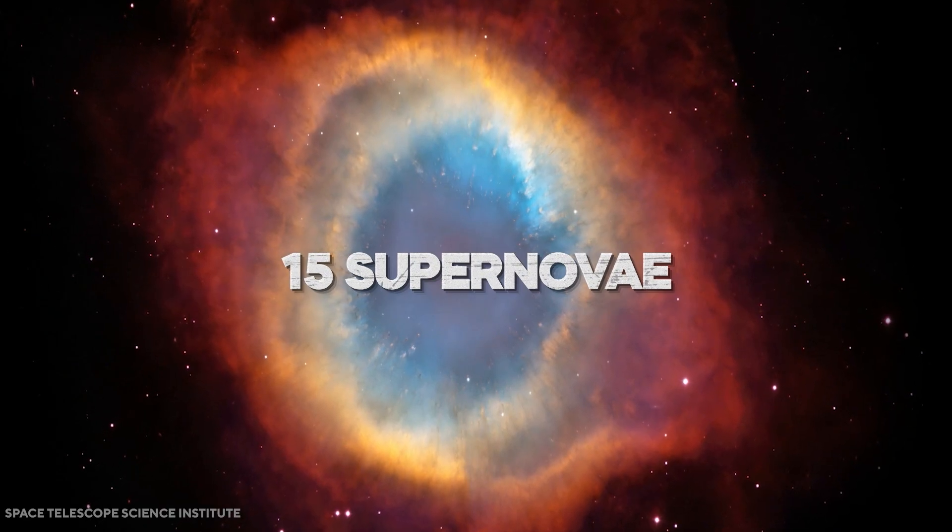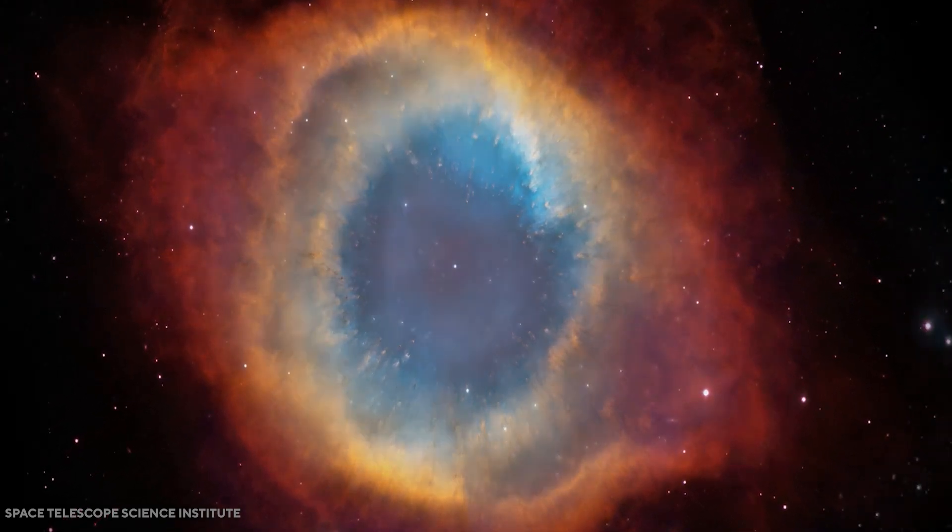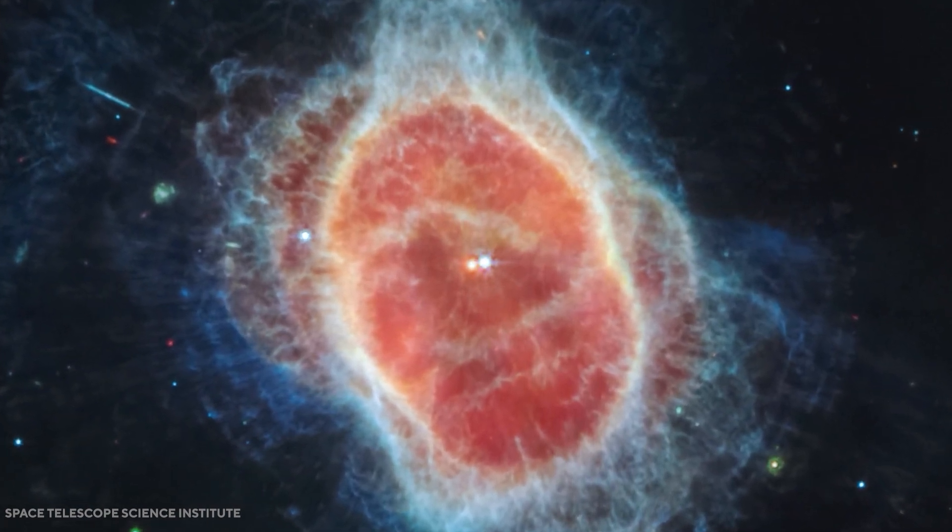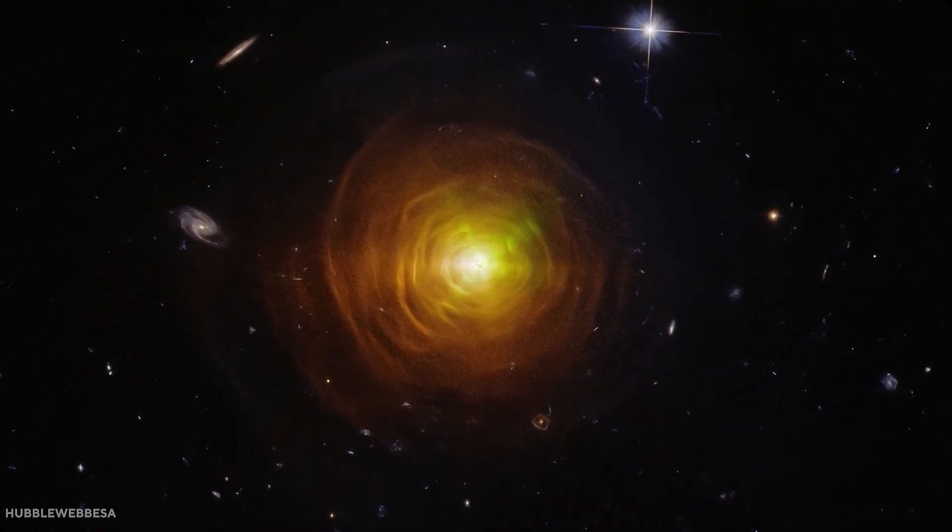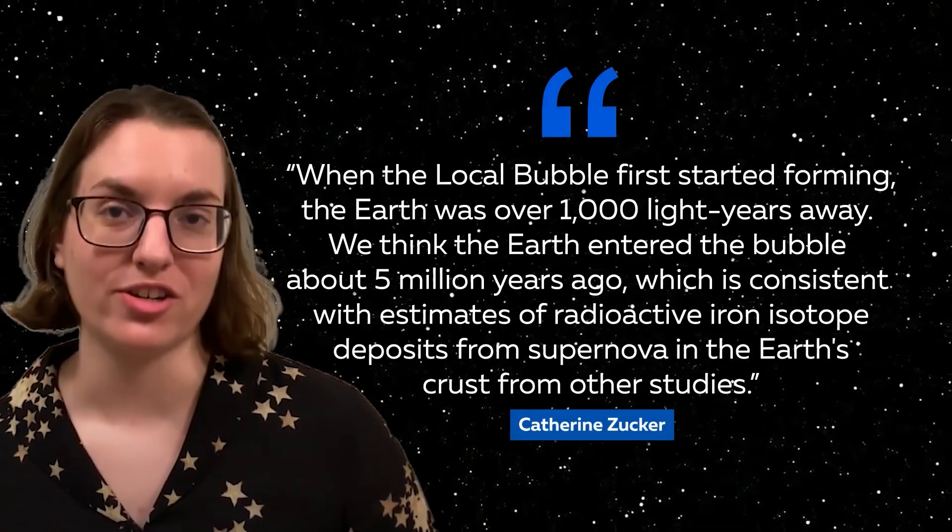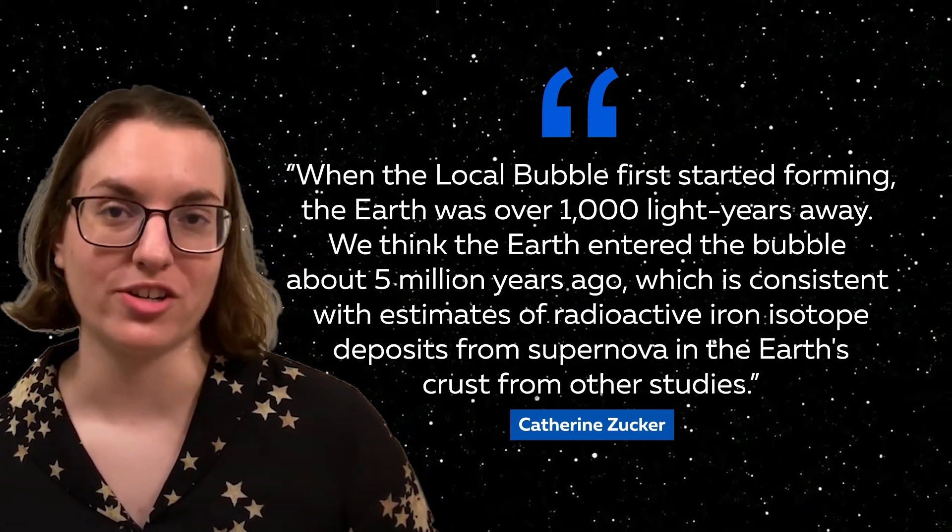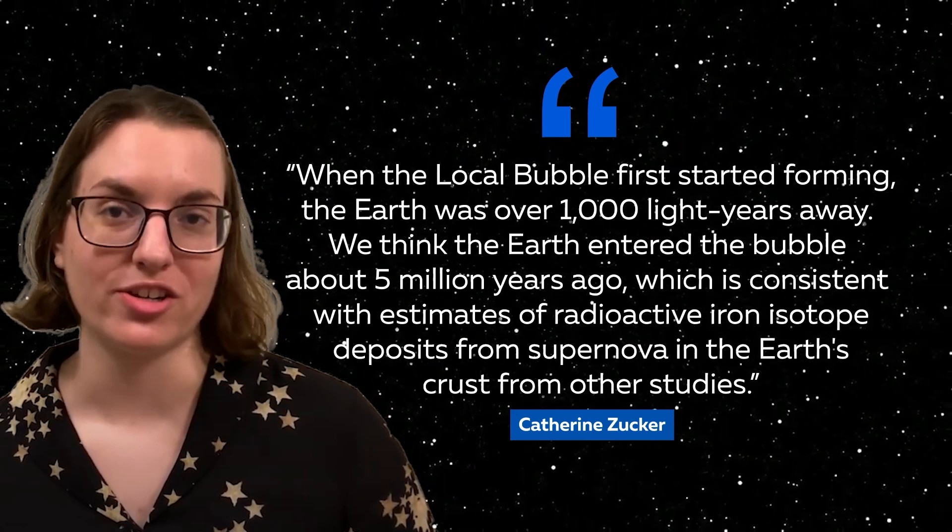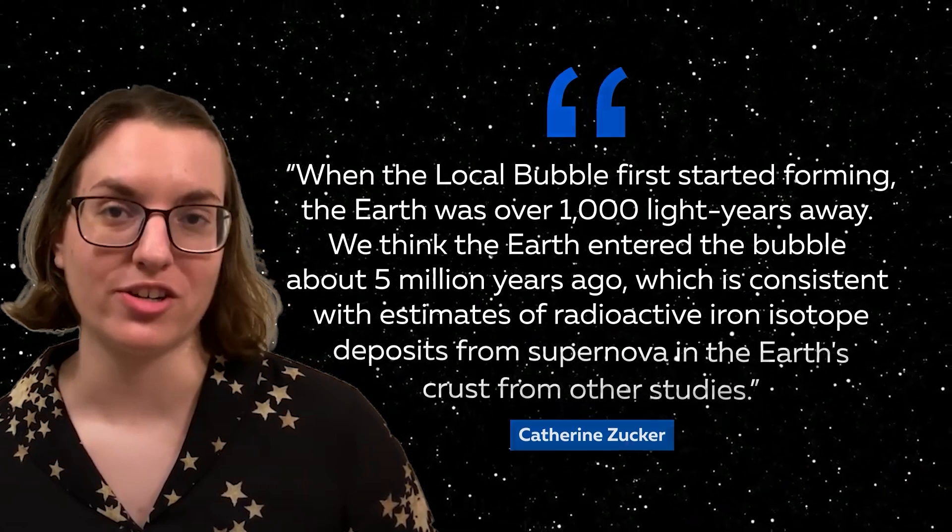Over millions of years, at least 15 supernovae have burst and pushed gas outward, creating a bubble where seven star-forming regions are found on the surface. The astronomers created gorgeous 3D maps of the local bubble's celestial material. Zucker says, when the local bubble started forming, the Earth was over 1,000 light-years away. We think the Earth entered the bubble about 5 million years ago, which is consistent with the estimates of radioactive isotope deposits from supernovae in the Earth's crust from other studies.